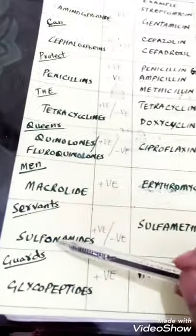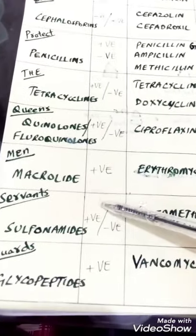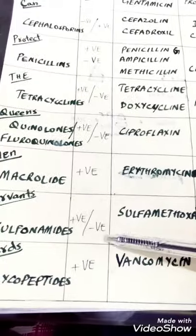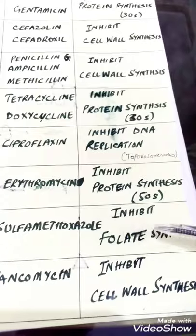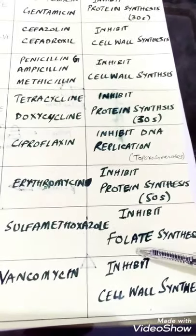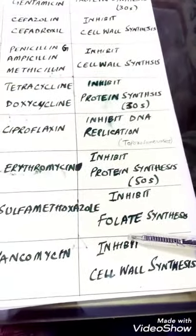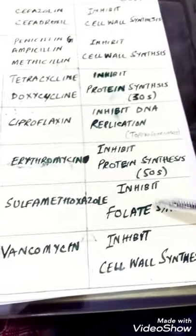The seventh class is sulfonamides, which act on both gram-positive and gram-negative bacteria. An example is sulfamethoxazole. Sulfonamides work by inhibiting folate synthesis. Humans obtain folate from their diet, but bacteria synthesize it themselves. By blocking folate synthesis in bacterial cells, sulfonamides destroy the bacteria, since folate is necessary for some metabolic processes.